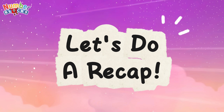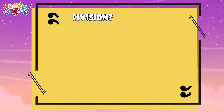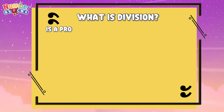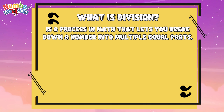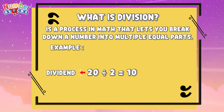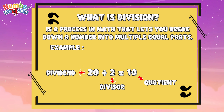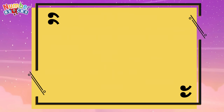And now, join me and let's do a recap. Let's define first: what is division? Division is a process in math that lets you break down a number into multiple equal parts. Here is an example: 20 divided by 2 is equals to 10. Wherein 20 is the dividend, 2 is the divisor, and 10 is the quotient. Here is the division symbol, and here is the equal sign.